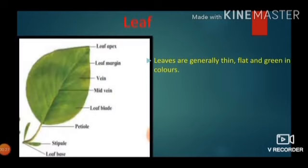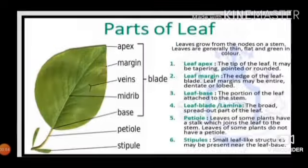The first topic is leaf. Leaves are generally thin, flat, and green in color. Leaves arise from the knots on a stem. The parts of a leaf are: leaf apex, leaf margin, vein, mid-vein, leaf blade, petiole, stipule, and leaf base.